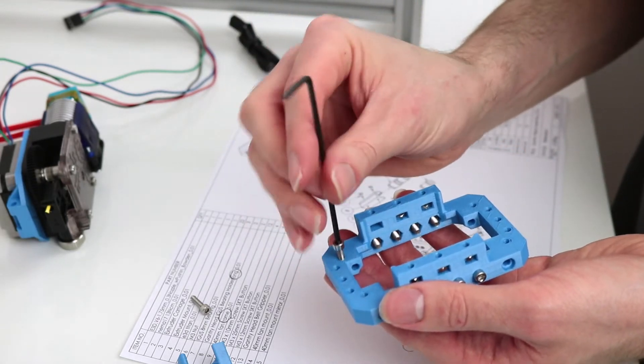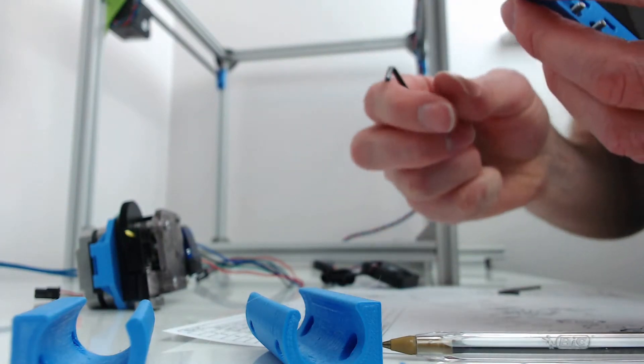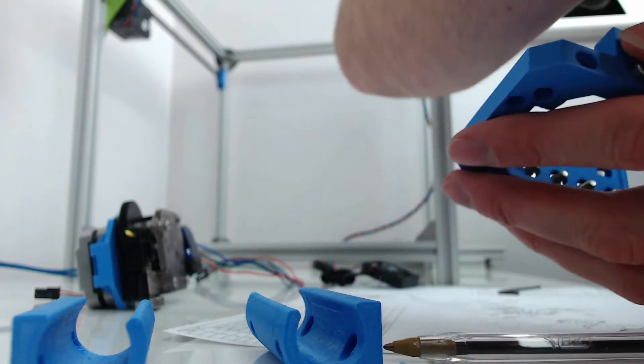Once that's pulled the nut in, you can remove the screw and it leaves that nut nice and deep in the hole.